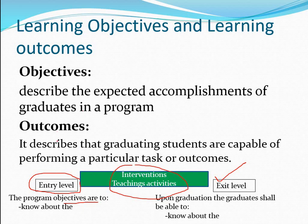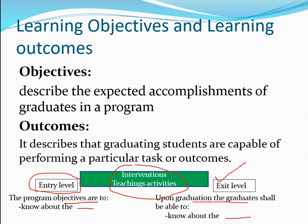While framing objectives, the blanket statement shall be: 'The program objectives are to...' — for example, to know about particular characteristics of the content targeted in a particular curriculum. Whereas in outcomes, you will use the blanket statement: 'Upon graduation, the graduate shall be able to...' followed by the particular level of competency being described.